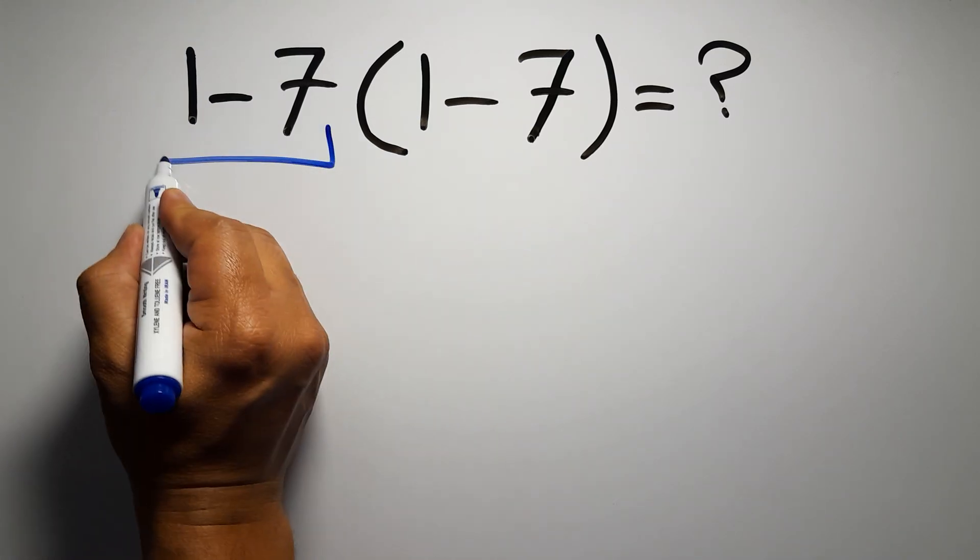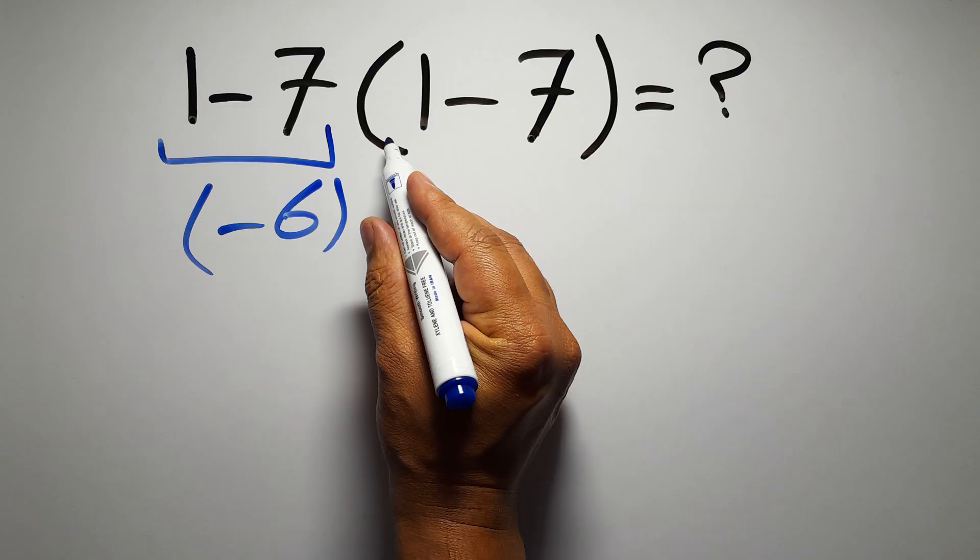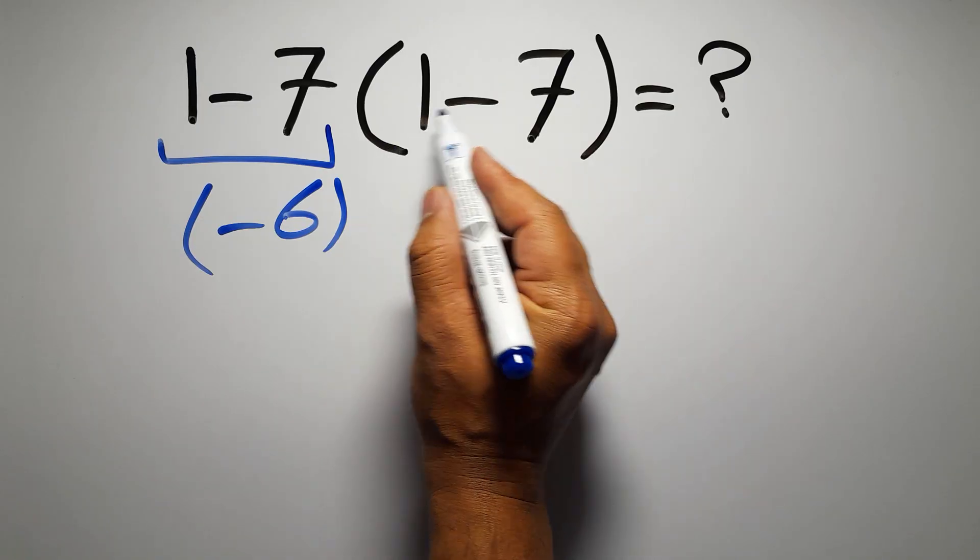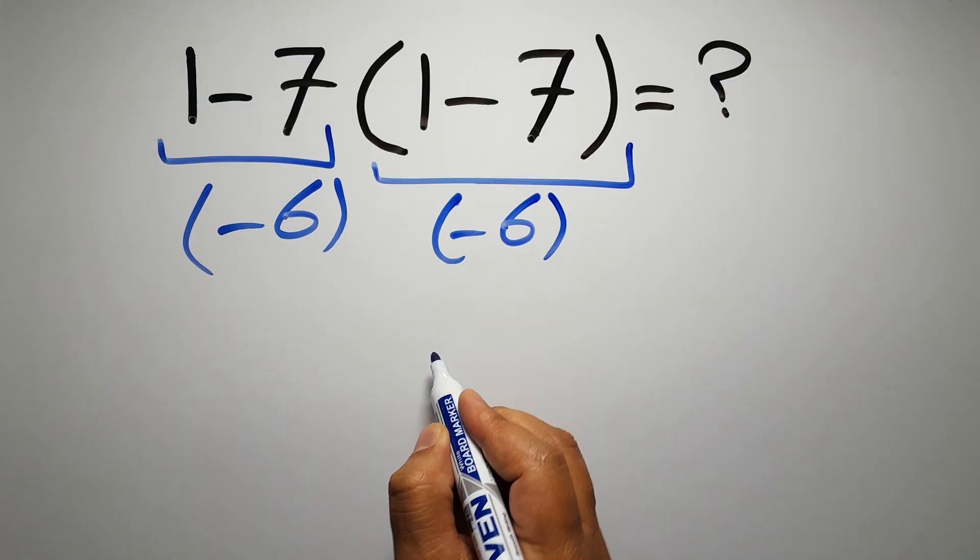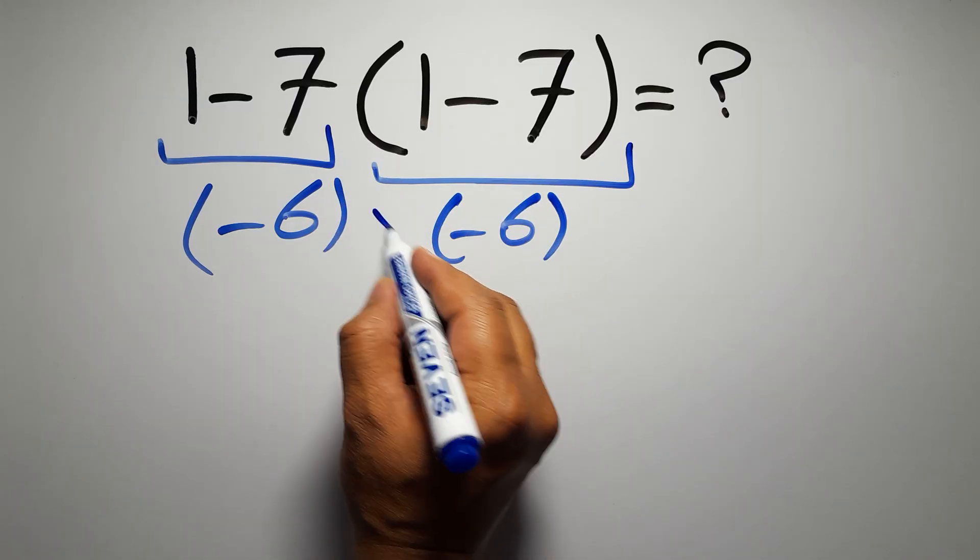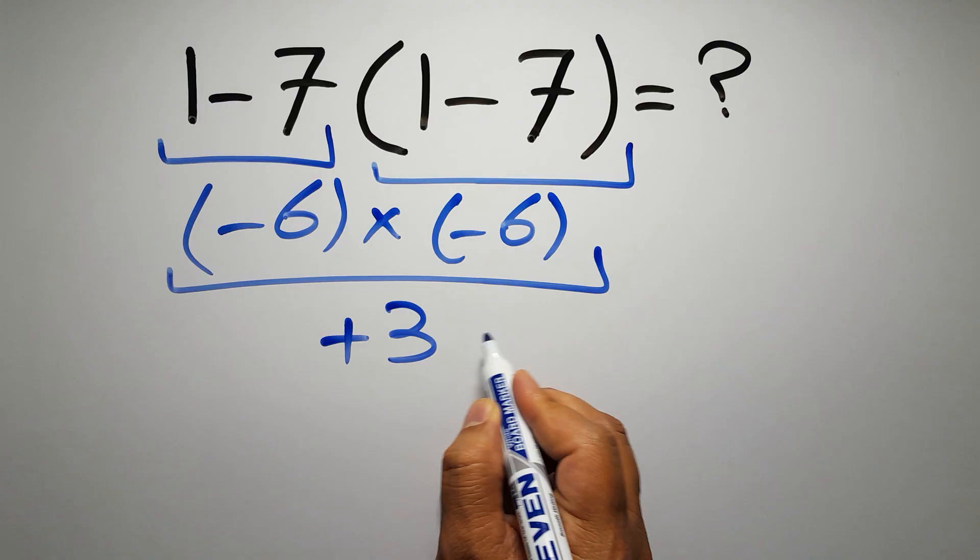1 minus 7 gives us negative 6, and again inside these parentheses we have 1 minus 7, so negative 6 times negative 6 gives us positive 36.